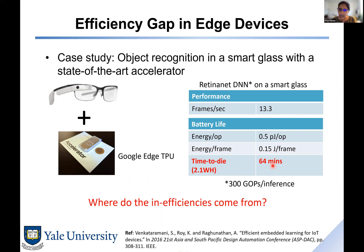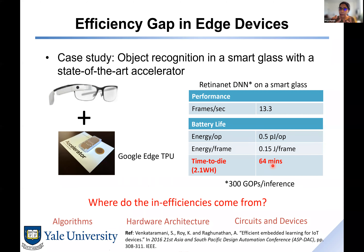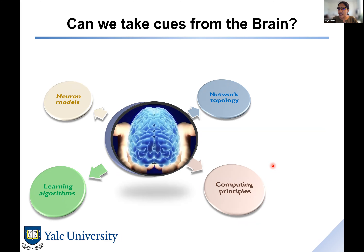This tells us that if you have this Edge TPU in a mobile processor or smart glass, you have to recharge the device every 60 minutes — which is not feasible or practical. You need to think about bridging these inefficiencies, and to understand that you have to ask where the inefficiencies come from: an inefficient algorithm, an inefficient hardware architecture that can't extract all throughput, or inefficient circuits and devices.